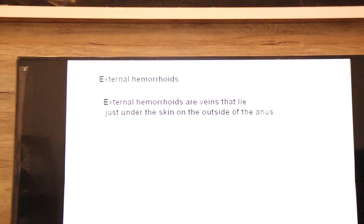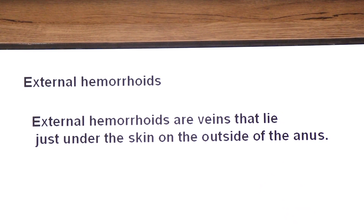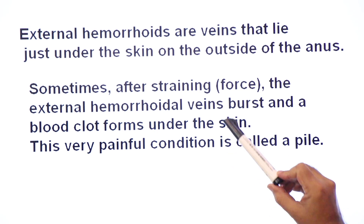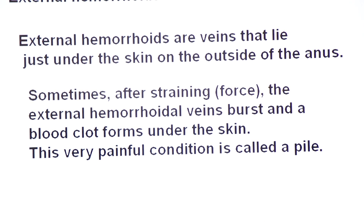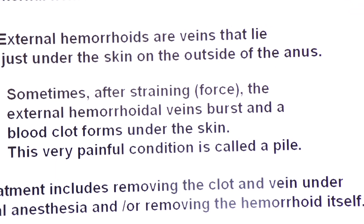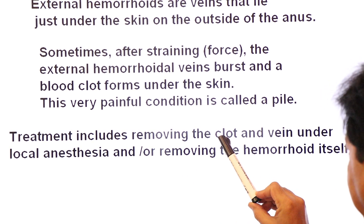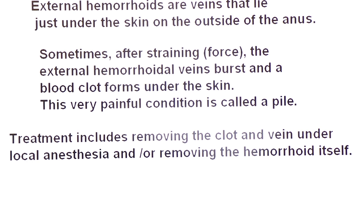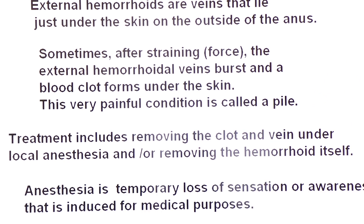Now coming to external hemorrhoids. External hemorrhoids are the veins that lie just under the skin on the outside of the anus — that is why they are called external hemorrhoids. Sometimes after straining, the external hemorrhoid veins burst and a blood clot forms under the skin. This is a very painful condition and it is called a pile.